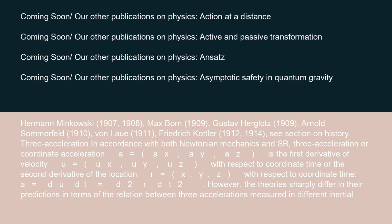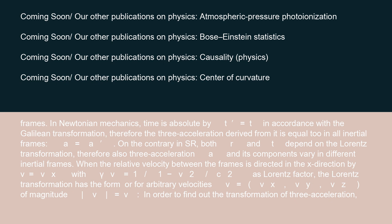Three-acceleration in accordance with both Newtonian mechanics and S.R.: Three-acceleration or coordinate acceleration A equals (AX, AY, AZ) is the first derivative of velocity U equals (UX, UY, UZ) with respect to coordinate time, or the second derivative of location R equals (X, Y, Z) with respect to coordinate time: A equals dU/dt equals d²R/dt². However, the theories sharply differ in their predictions in terms of the relation between three-accelerations measured in different inertial frames. In Newtonian mechanics, time is absolute, T equals T, in accordance with the Galilean transformation. Therefore, the three-acceleration derived from it is equal in all inertial frames: A equals A.